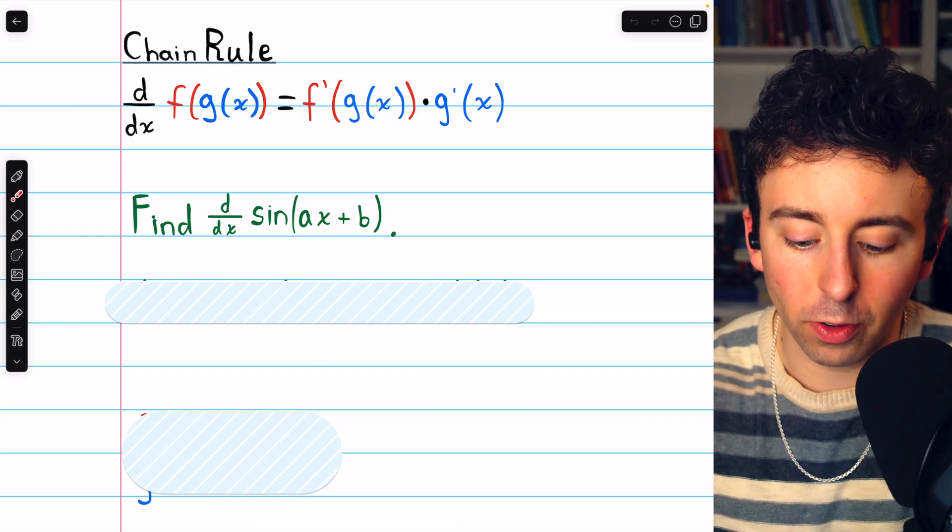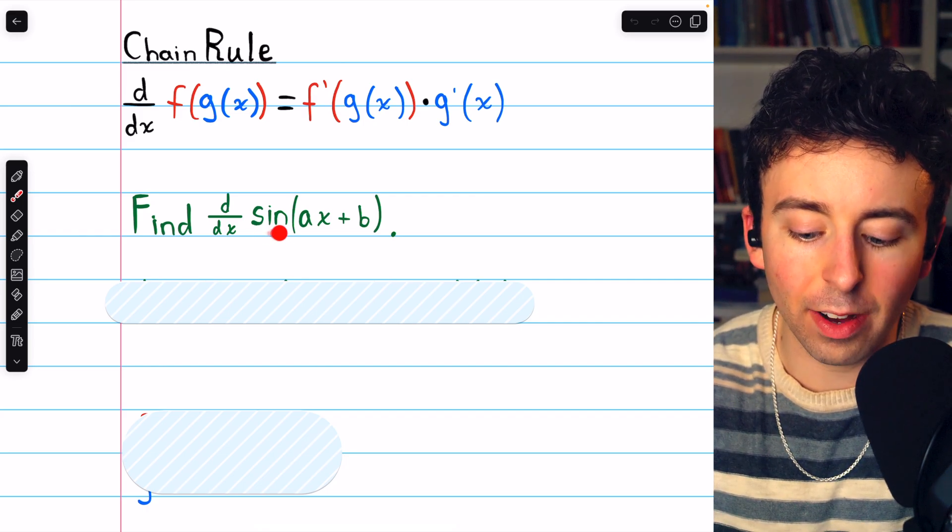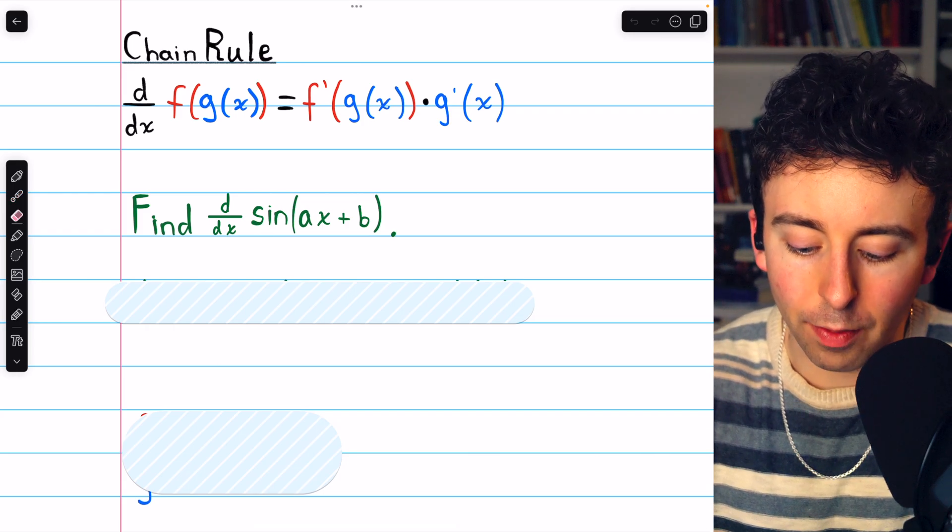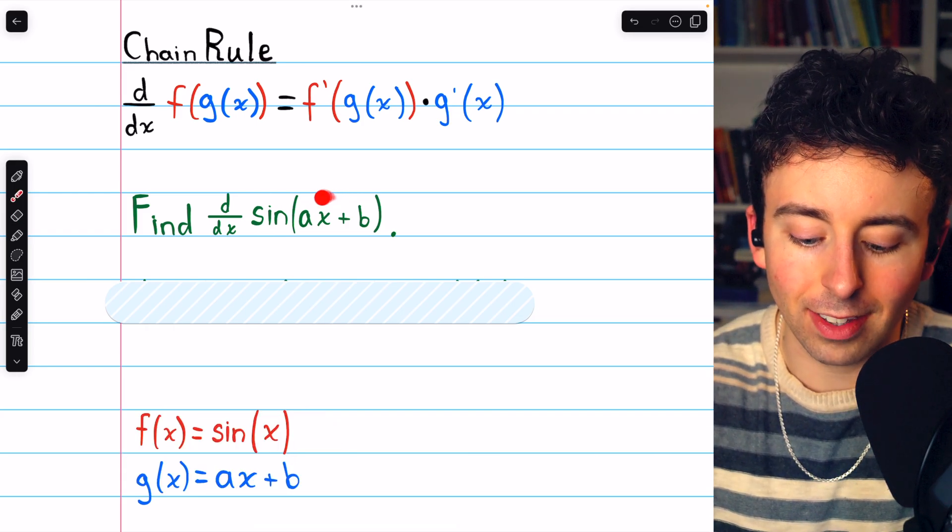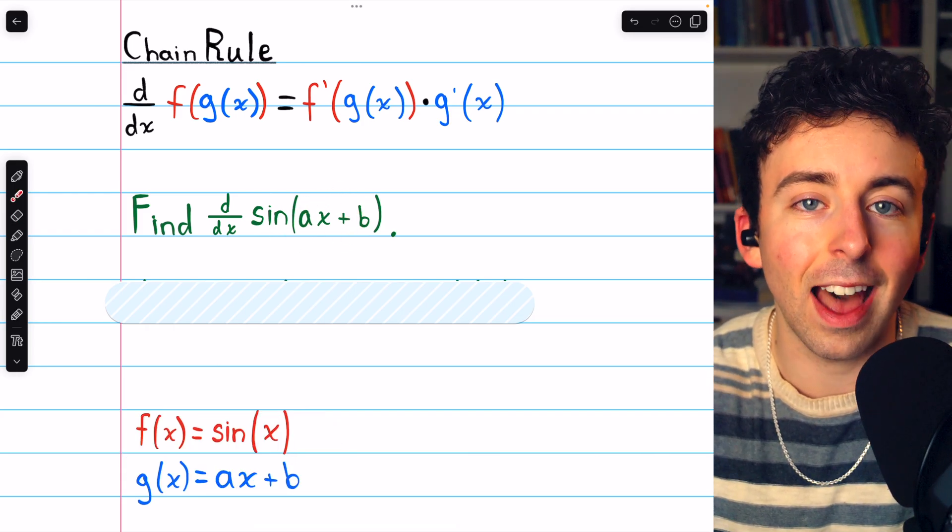f is the outside function, which in this case is the sine function, and g is the inside function, which is ax plus b. That's inside the sine function.